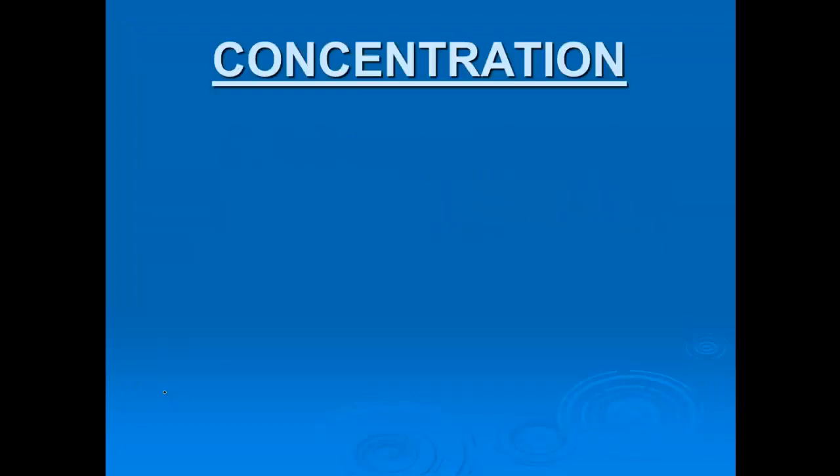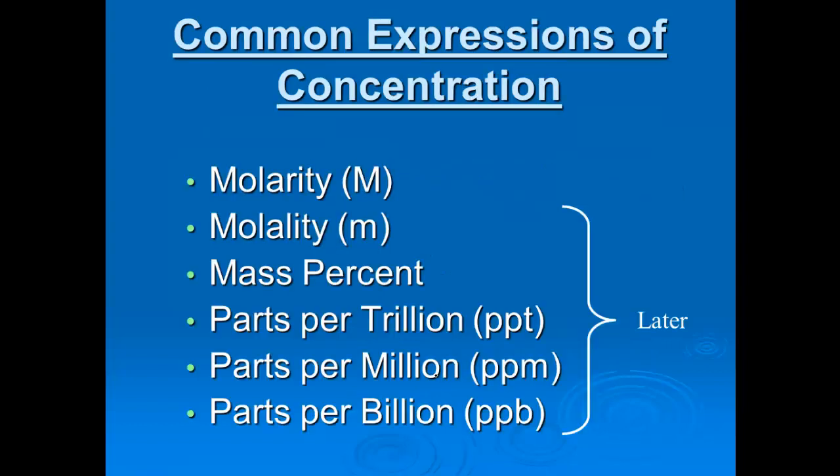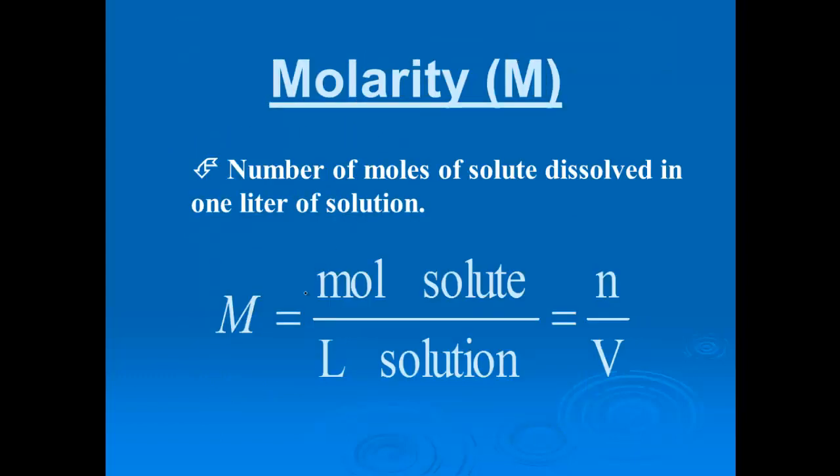Now, the next thing we're going to talk about is composition of solutions. And when we define concentration, typically concentration is the grams or moles of solute per unit of solution or solvent. So, grams or moles of solute per whatever unit we have of solution or solvent. And there's actually a couple of different terms for this. We're only going to focus on molarity. So, here are some different common expressions of concentration. Molarity, we saw last year, capital M. Molality, mass percent is something that we still can do. We did a lot of mass percent stuff in unit one. And then you've got parts per trillion, parts per million, parts per billion, which I think is pretty self-explanatory. But right now, we're going to focus on molarity.